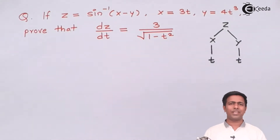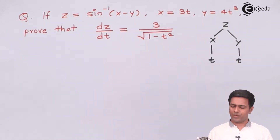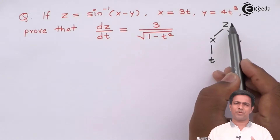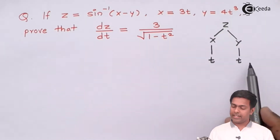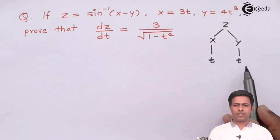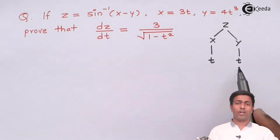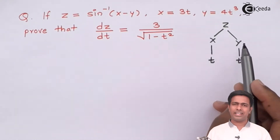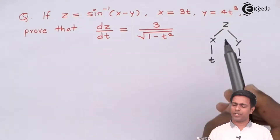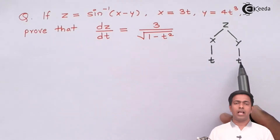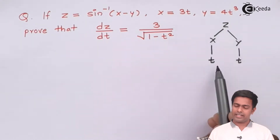This is the tree diagram for the given function. As I told you in the previous video, z is called the dependent variable because it depends on x, y, and indirectly on t. T is the independent variable as it is the last level of the tree diagram. X and y are called intermediate variables. When finding partial differentiation, we establish a relationship between the dependent and independent variable using the intermediate variables.